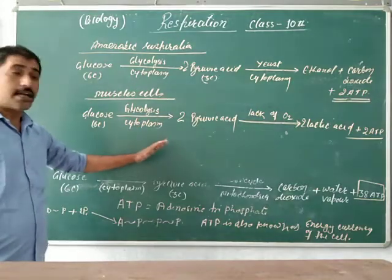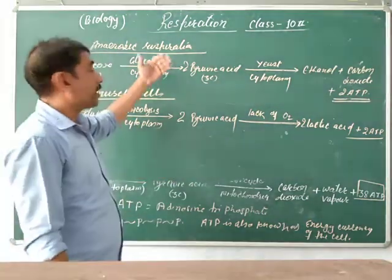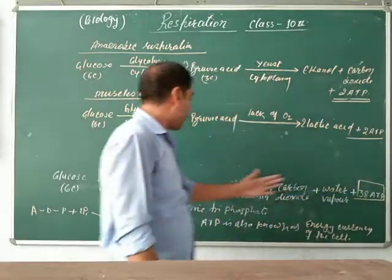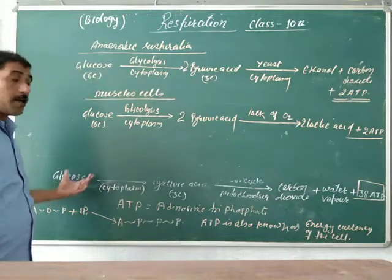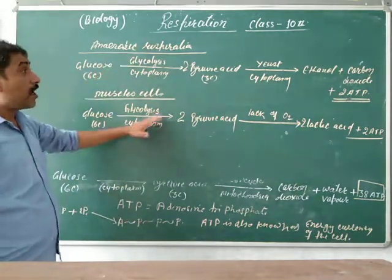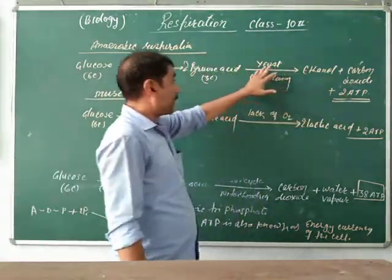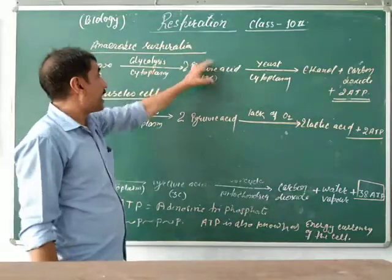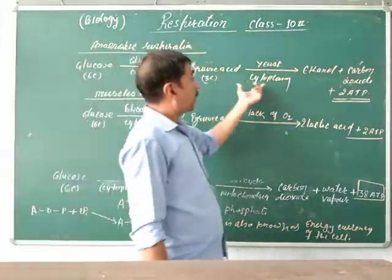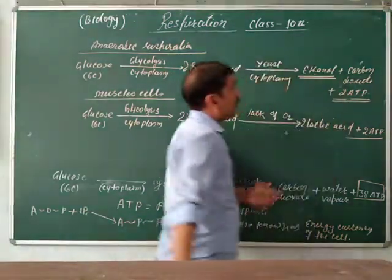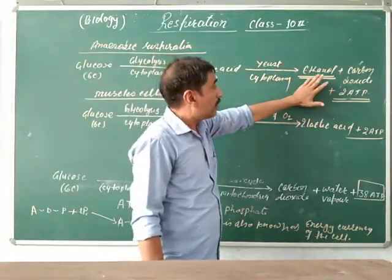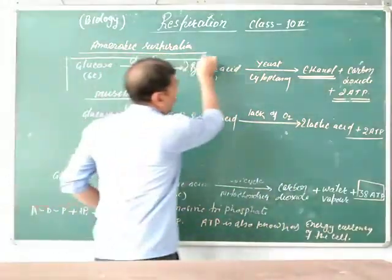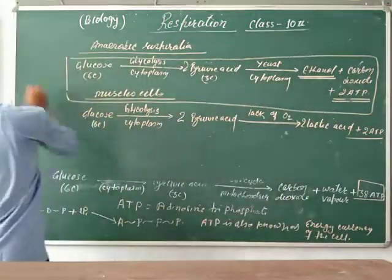In aerobic respiration, a lot of energy is released — 38 ATP molecules — by the complete combustion of glucose molecules. But in the case of anaerobic respiration, only 2 ATP molecules are released. In muscle cells, anaerobic respiration first converts glucose into pyruvic acid inside the cytoplasm by glycolysis, then it is converted into ethanol — as in wine and beer — plus carbon dioxide plus 2 ATP molecules. This reaction is also known as the fermentation process.